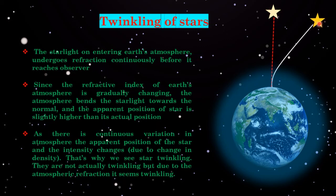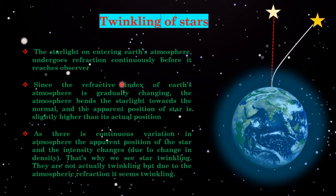The position of a star appears slightly higher than its actual position due to earth's atmosphere. Now the question is: we see stars twinkling but we don't see planets twinkling. Planets do not twinkle because, although stars are actually larger, planets are nearer to us so they appear larger. A larger apparent size means higher intensity of light, and our eyes cannot detect the slight variation in intensity from planets — that's why planets do not twinkle.